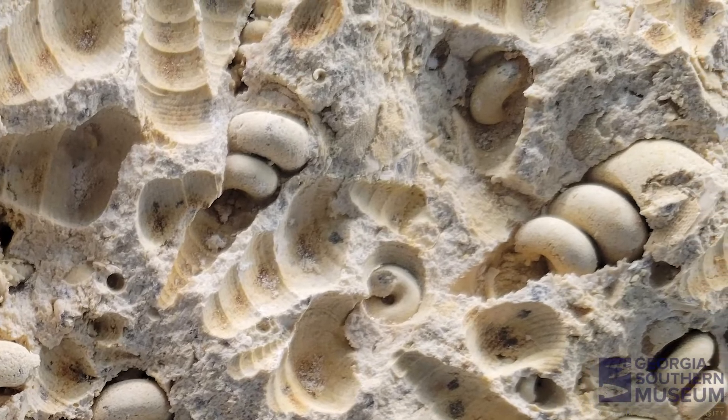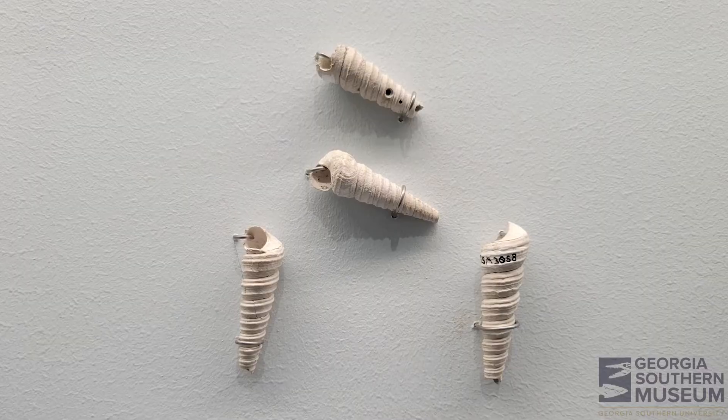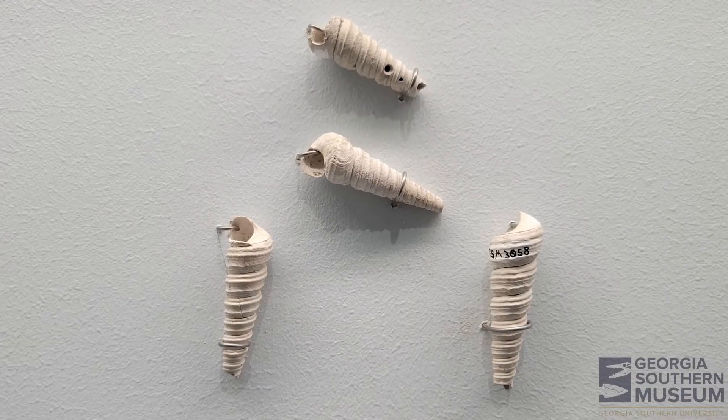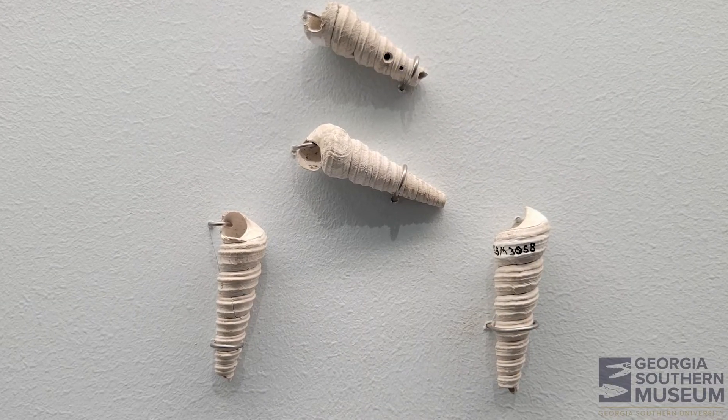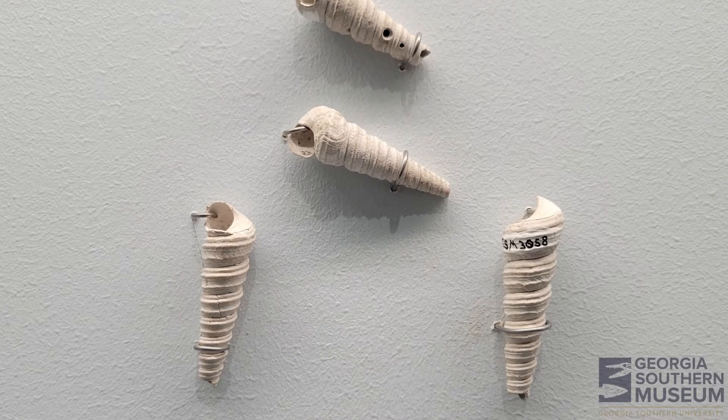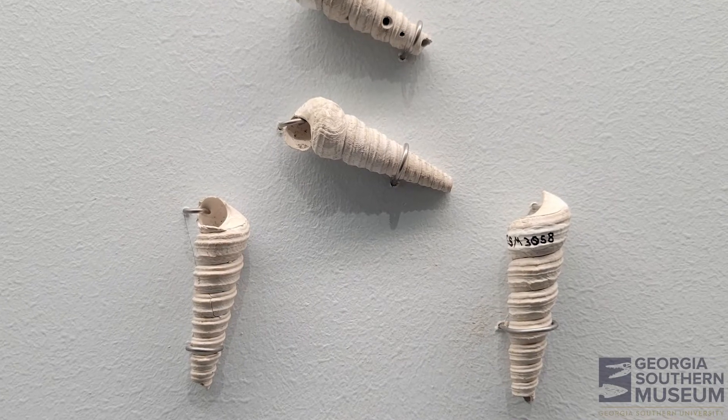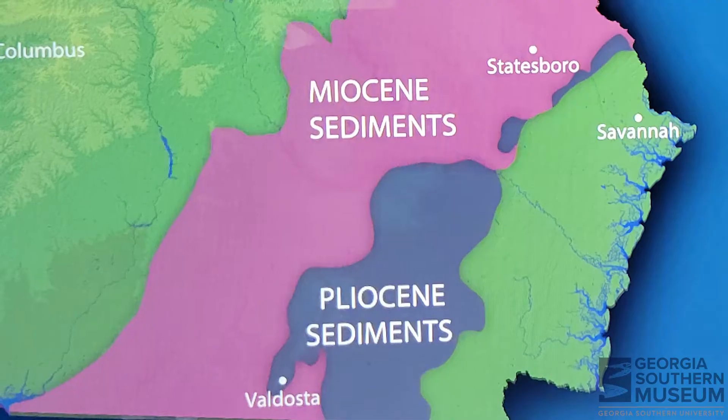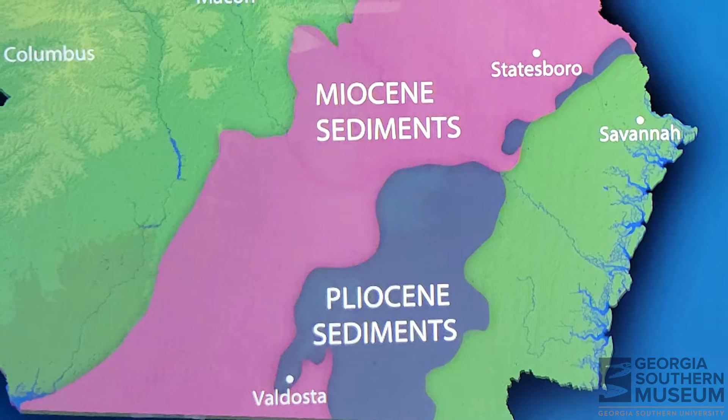If you're wondering what Terratella shells look like, we also have much younger fossils on display. If you look at the fossil shells in the Paleocene case, you can see examples of a 3.5 million-year-old species called Terratella etouanensis that were found nearby in Statesboro, Georgia. When this species lived, the global climate was much cooler and drier, which caused the sea level to drop.